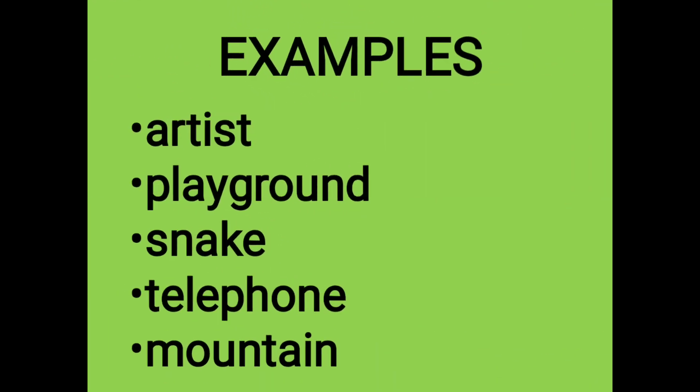Let's learn the examples of common noun. Artist, playground, snake, telephone, mountain. These all examples are common names. Artist can be a girl, boy, or lady. There is no particular name given, so it is a common word.